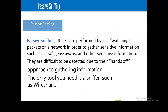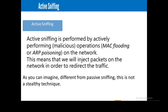Passive sniffing attacks are difficult to detect due to their hands-off approach to gathering information. The only tool you need is a sniffer, such as Wireshark. Active sniffing is performed by actively performing malicious operations, such as MAC flooding or ARP poisoning on the network. This means that we inject packets on the network in order to redirect the traffic. Different from passive sniffing, this is not a stealthy technique, so active sniffing can easily be detected by intrusion detection technology that you have put in place.